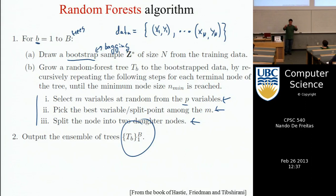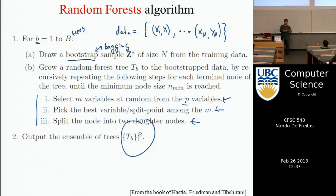To grow the tree, it's a recursive procedure. You start at the root and grow this binary tree by splitting the root node into two children and then recursing into the two children. You always take a node and split it into two, and you do that until you meet some stopping criteria — like there's too few data in the leaf to split, you can't find a good split point, or the tree has reached the max depth you've set beforehand.